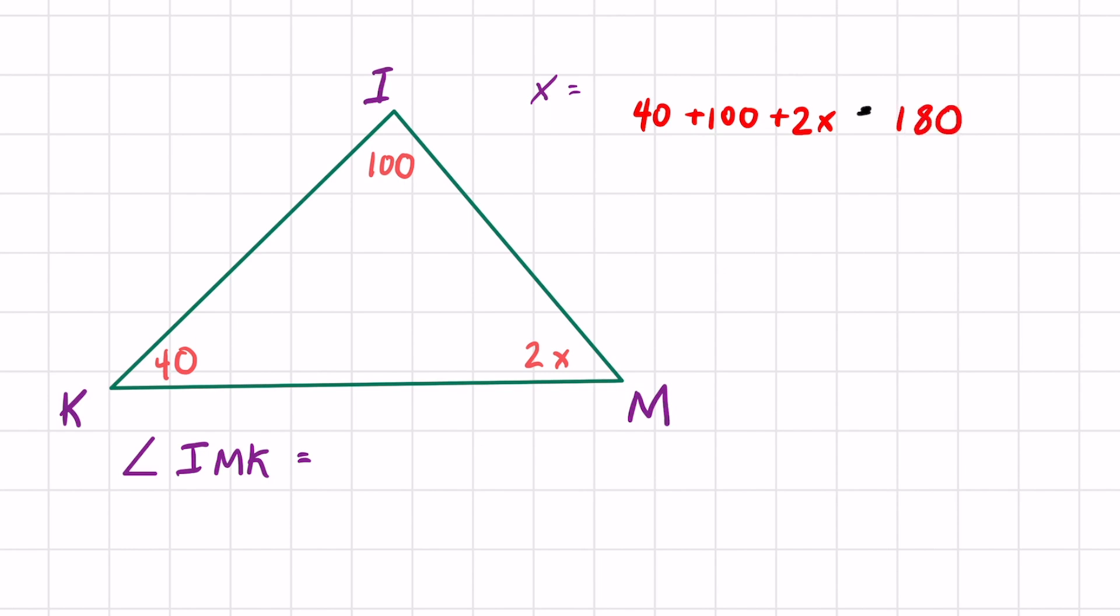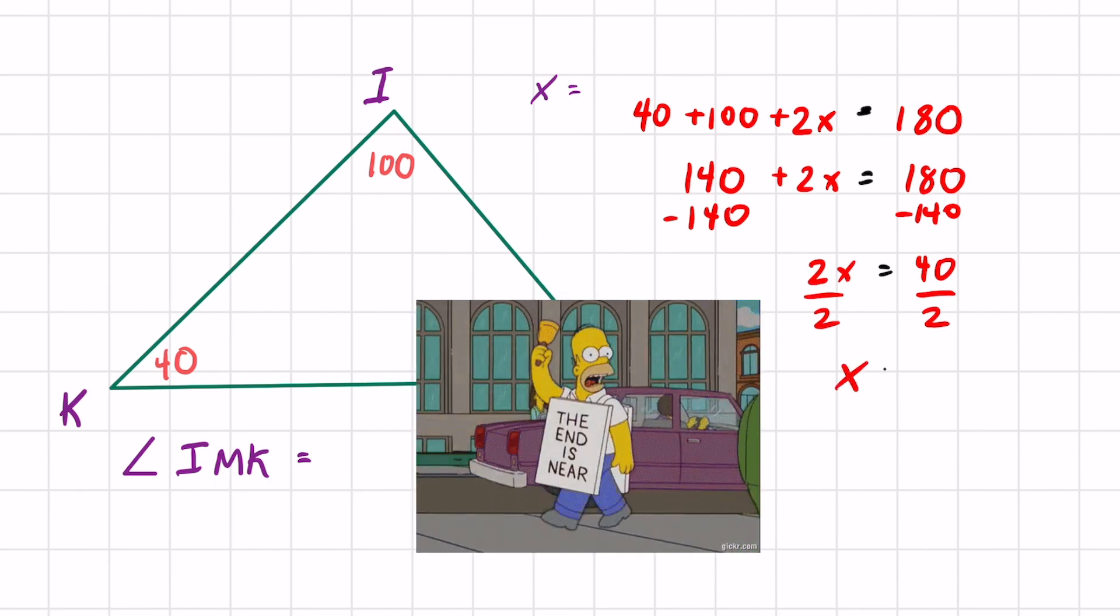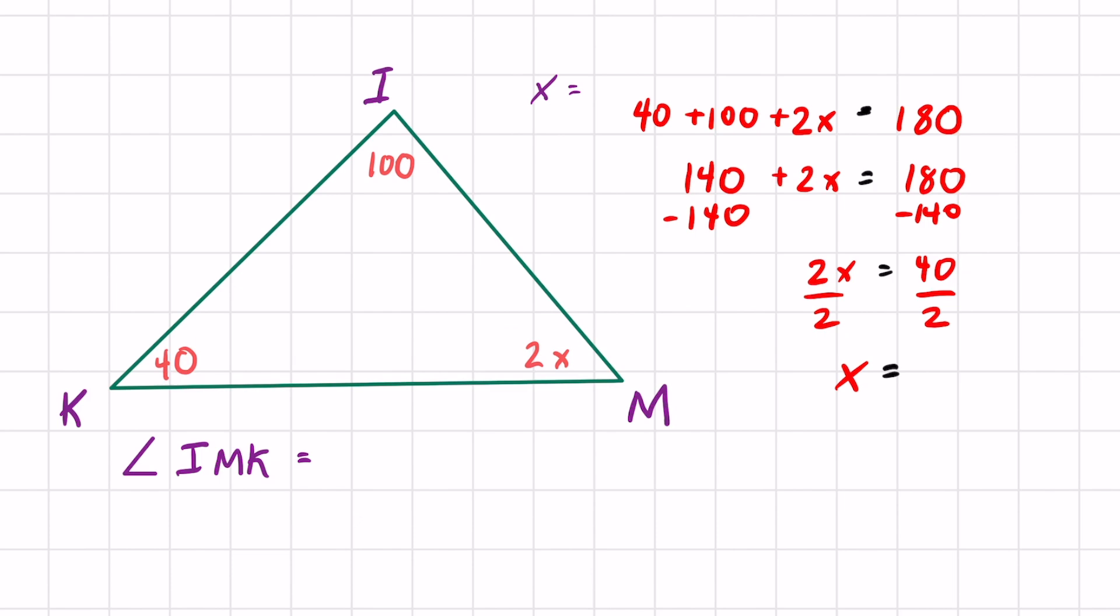Next, combine like terms. These two I can combine because they don't have a variable, so that's going to be 140 plus 2x, and that equals 180. Now I have to solve for x. I want to get x by itself, so get rid of 140 first on both sides. You're left with 2x equals 40, divide both sides by 2, and you got yourself a part of the problem. X equals 20.